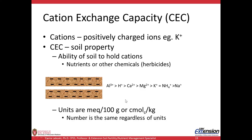With cation exchange capacity, the units can be confusing. You may see units of milliequivalents per 100 grams — that's an older term that still gets some use. And then there are the more modern metric units called centimoles of charge per kilogram. The nice thing about the units on cation exchange is that you don't have to convert one to the other — they're the same number. So if you have five milliequivalents per 100 grams, you have five centimoles of charge per kilogram. That's really handy — one of the very few places where you don't have to convert units.